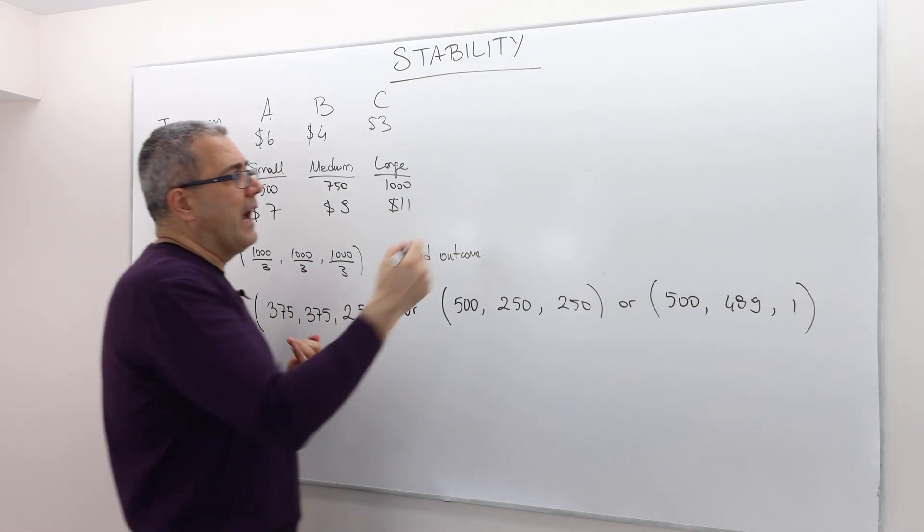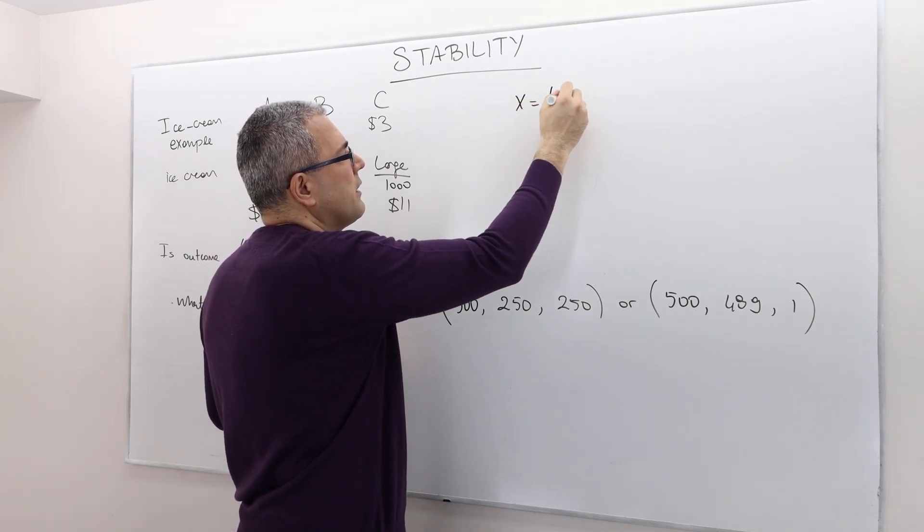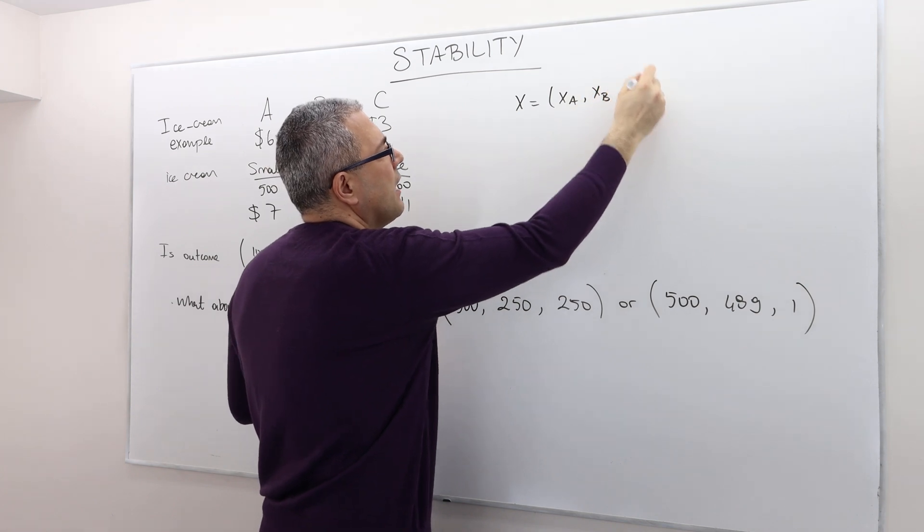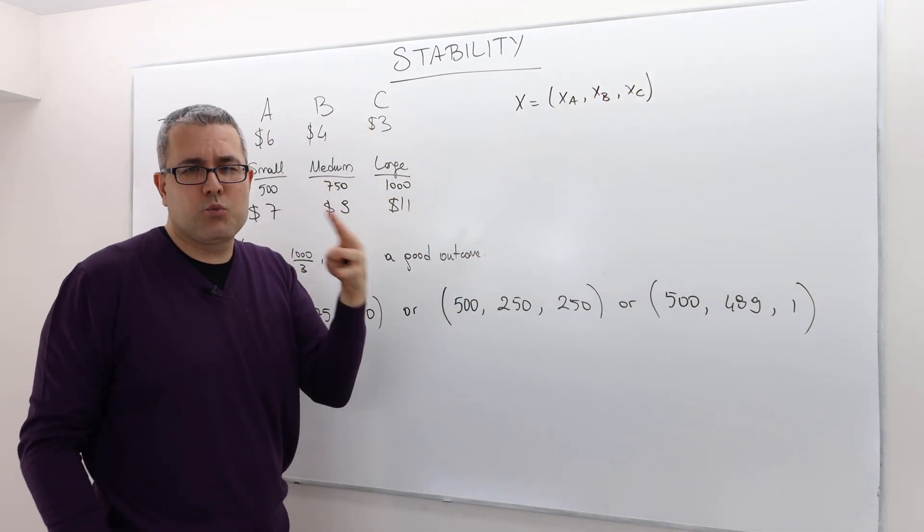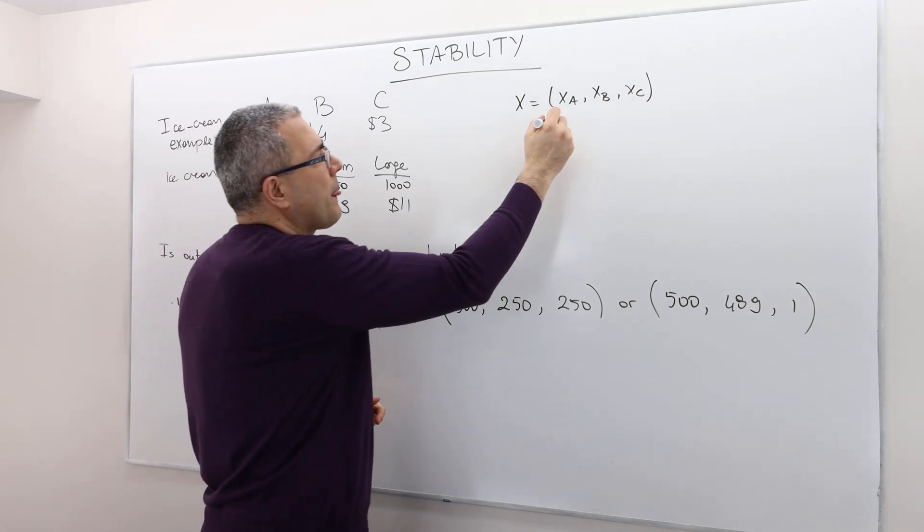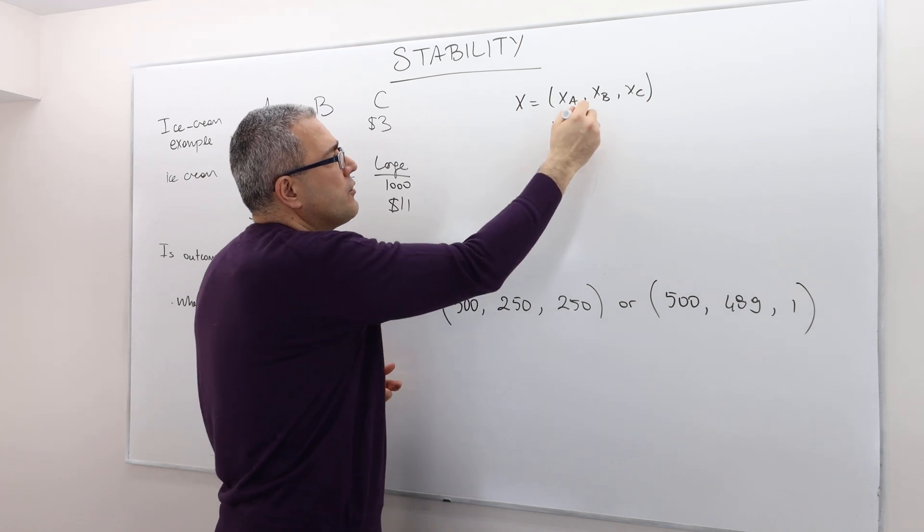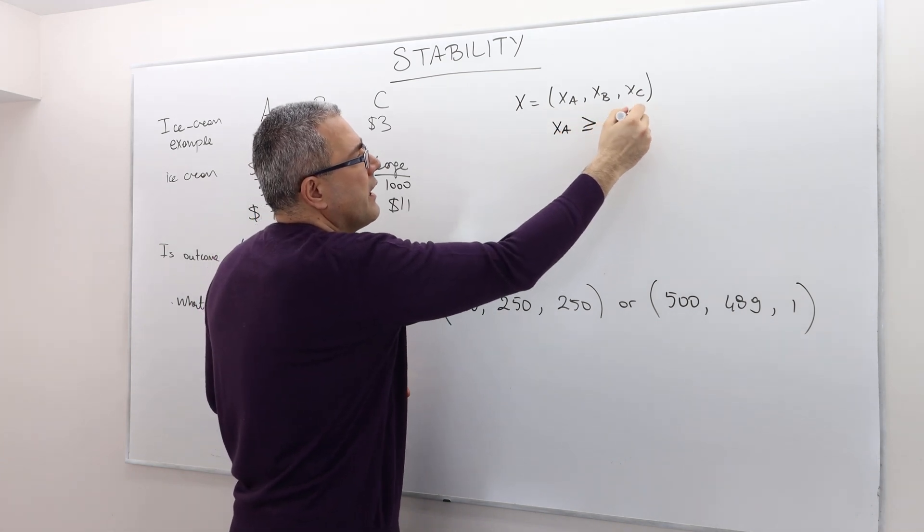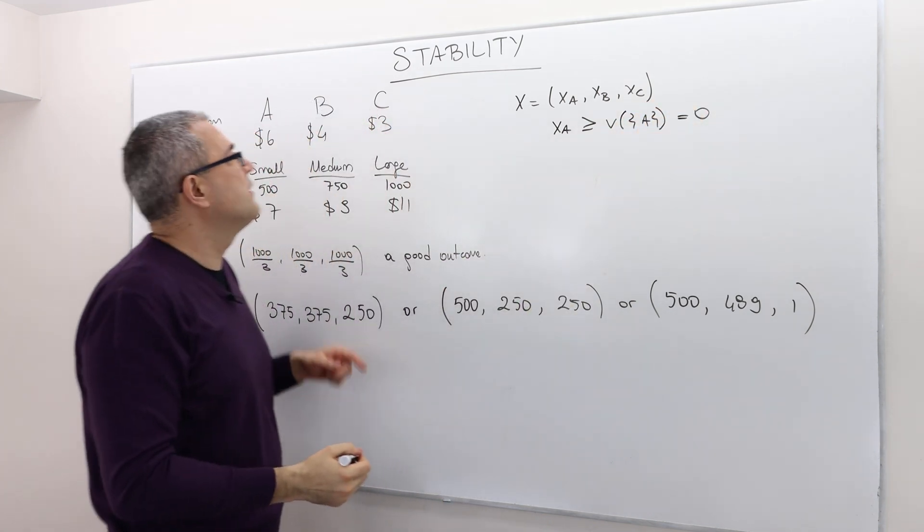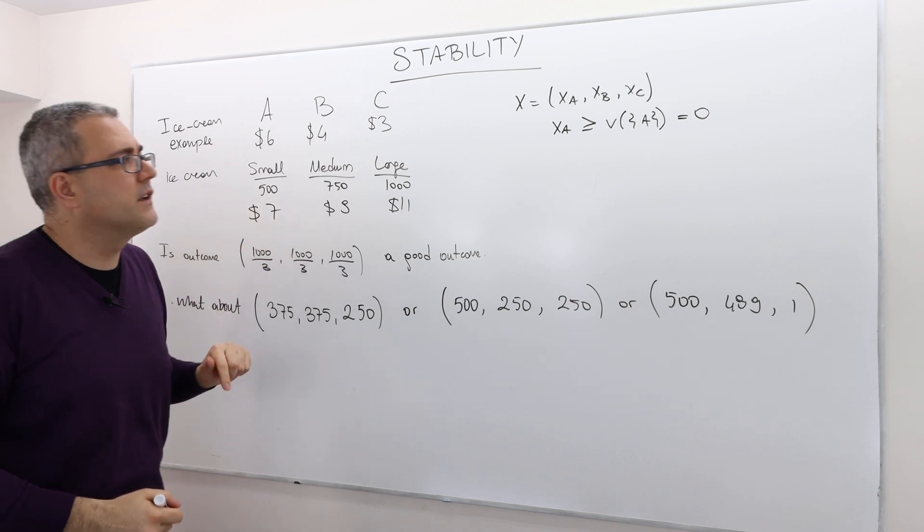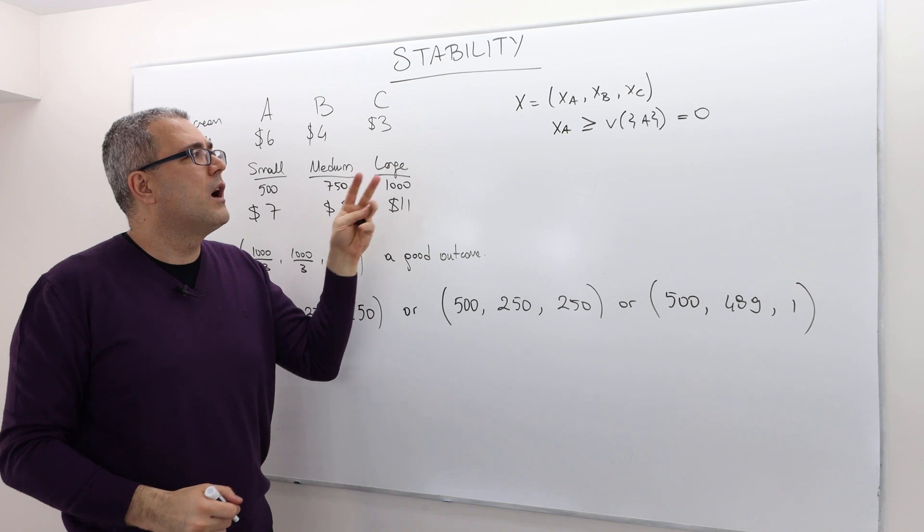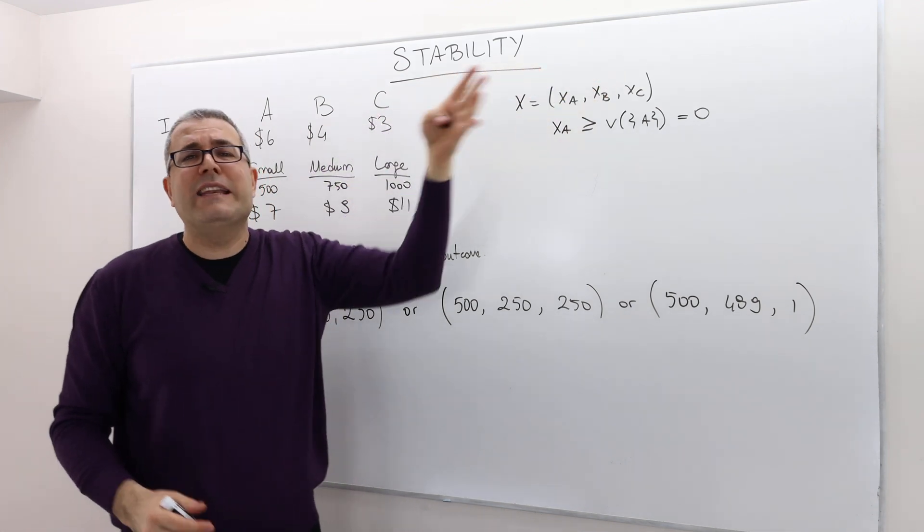So the thing is, therefore, part of the solution is already obvious. They're going to form the grand coalition thanks to super additivity. But the question is, how are they going to split this 1000 grams of ice cream among themselves? Well, for an outcome, remember, it's a payoff vector. So I'm going to denote it as XA, XB and XC because instead of using 1, 2, 3, I just want to use the names A, B and C of the players.